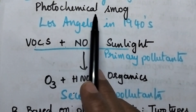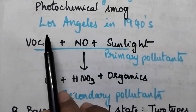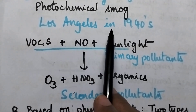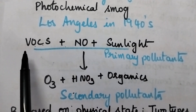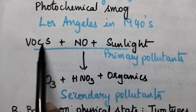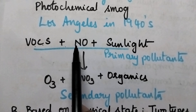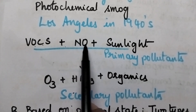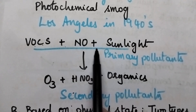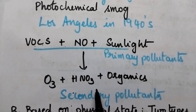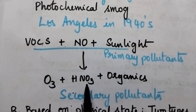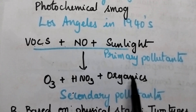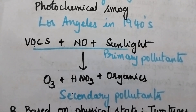For the first time, photochemical smog was identified at Los Angeles in the year 1940. When the air is full of volatile organic compounds and consists of nitric oxide, then in the presence of sunlight, they combine and result in the formation of ozone, nitric oxide, nitric acid and other organics. This mixture is called photochemical smog.